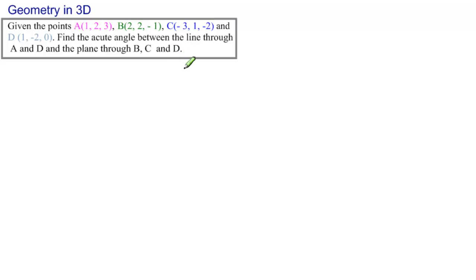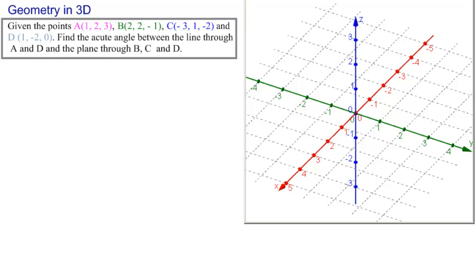This problem has several steps. Let's look at it geometrically and then algebraically. Here's our three-dimensional space. Let's draw the four points A, B, C, and D. Now we need the line through A and D, and the plane through B, C, and D.